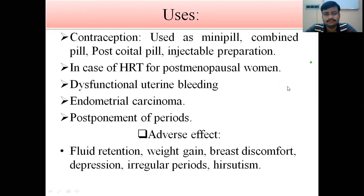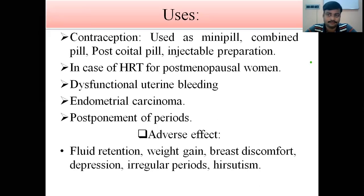The uses of progesterone include contraception as a mini pill, combined pill, and post-coital progestins. In hormonal replacement therapy for postmenopausal women, progesterone plays a major role. It can control dysfunctional uterine bleeding, treat endometrial carcinoma, and be used in carcinoma maintenance. It is also used for postponement of periods; after withdrawal of the drug within one to two days, the subject will resume a regular period.